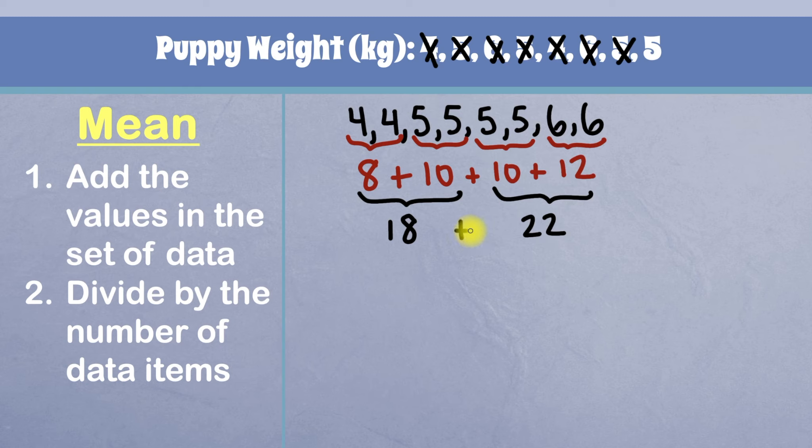When I add 18 plus 22, just to be safe, we can do it on the side, we'll have 18 plus 22. Eight plus two is 10. We'll bring down the zero, carry a one, one plus one is two, two plus two is four. So we'll have four there. And that gives us our final grand total of all the data as 40.